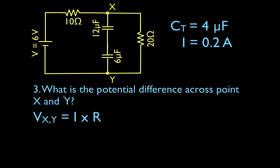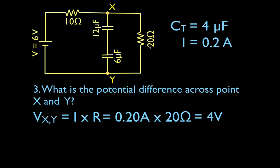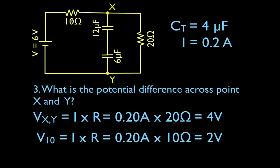We can get the voltage across the 20-ohm resistor using Ohm's law. The voltage from X to Y equals the current, 0.25 amps, times the resistance, 20 ohms — that's 4 volts. That branch is in parallel with the capacitor branch, so the voltage across the capacitors is also 4 volts. We can verify: the voltage across the 10-ohm resistor is 0.25 times 10, which is 2 volts. So 4 plus 2 equals 6 volts — that matches our supply and confirms Kirchhoff's voltage law.